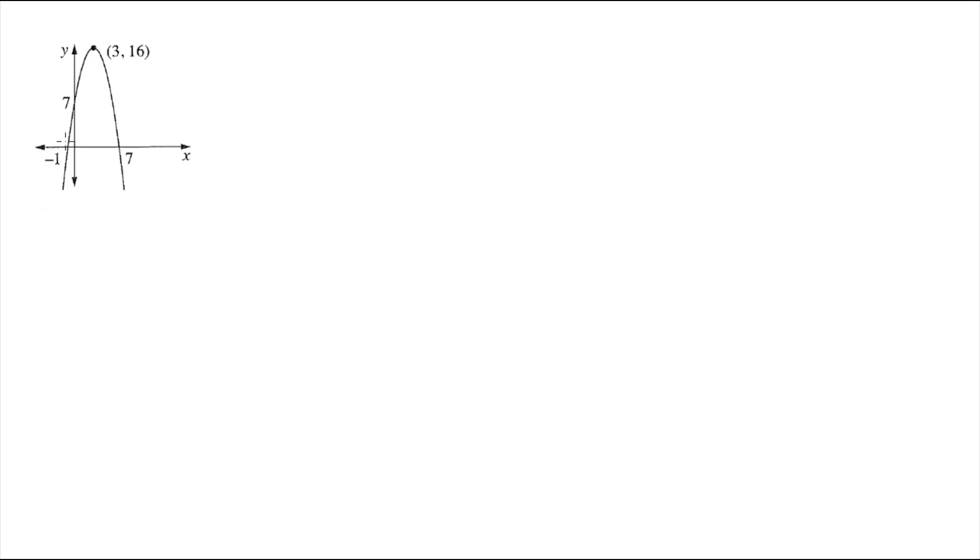So the two roots are where the graph crosses the x-axis. We have one root here at x equals negative one and one root here at seven. So we have x equals negative one and x equals seven as our two roots.